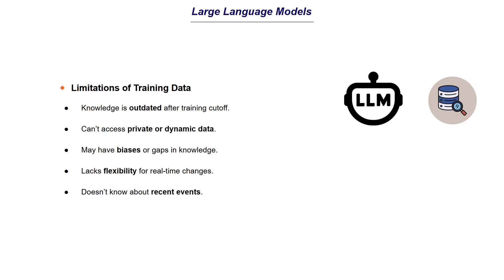LLMs are released in different versions — for example, GPT-3, 3.5, 4, and Llama 2, 3, and 4. There is a knowledge cutoff date. Let's say it's April 2025 and the model was trained on data only until December 2024. So there is roughly a four-month gap where the model doesn't know what happened because that data is not present in its training set. This is one of the limitations.